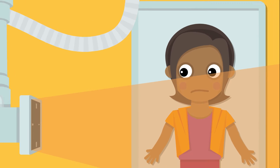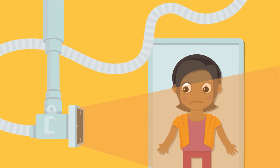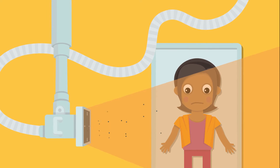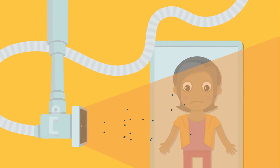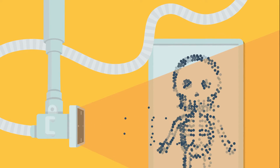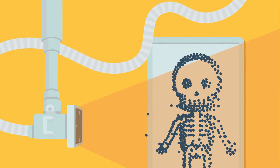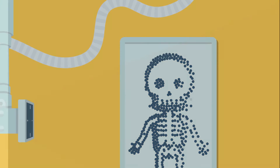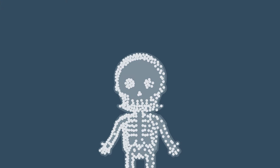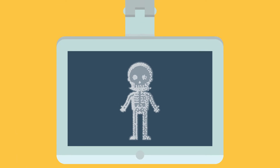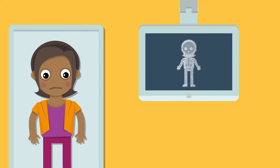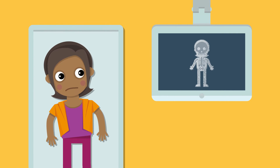Without you even noticing it, a lot of rays collide with your bones and the image plate. Because a lot of rays draw dots, an image appears over time. That's why you can see the bones in your body with x-ray.